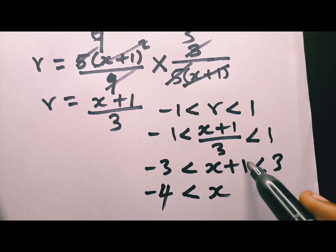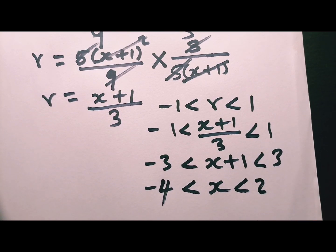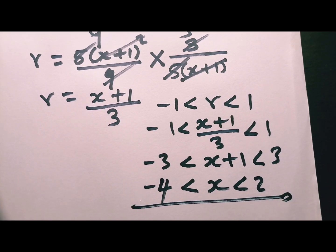Now I'm left with x alone. I do the same thing. Take this to the other side. I will have 3 minus 1. This is going to be 2. This is my x now. x is greater than negative 4, but it's less than 2. This is going to be your x.